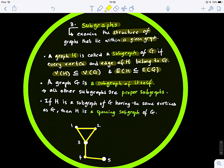And all other subgraphs are, we call them, this is important, we call them proper graphs. If you exclude the graph itself, all other subgraphs are called proper graphs.